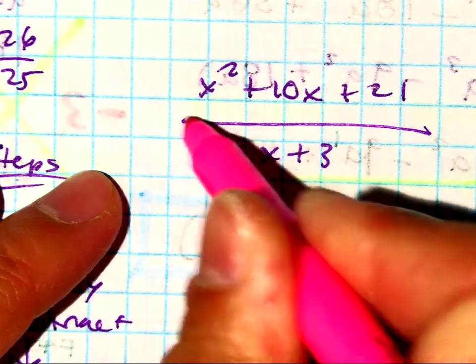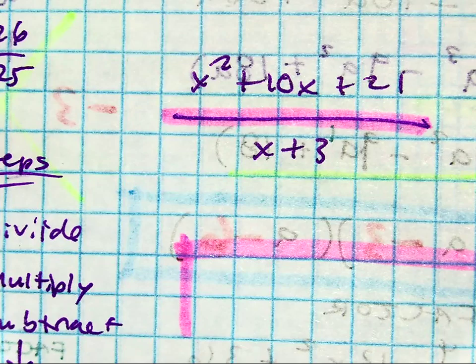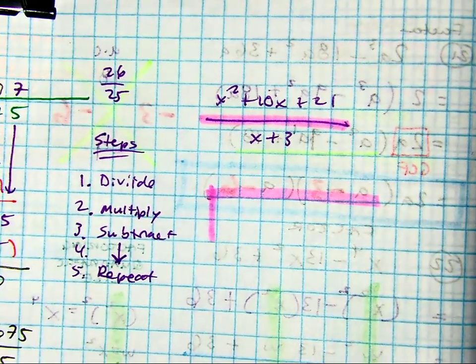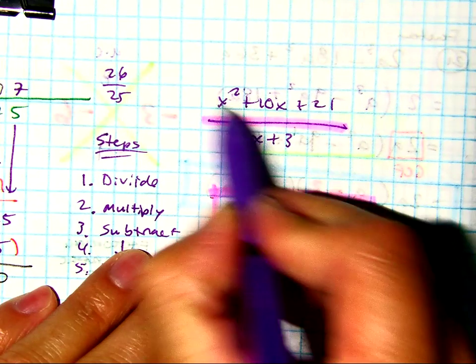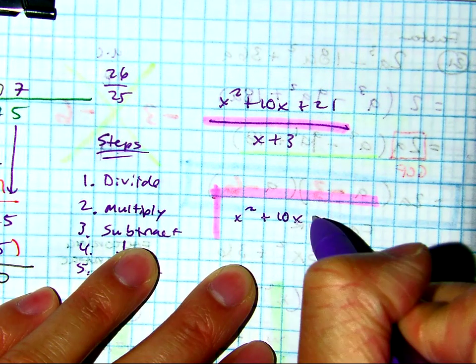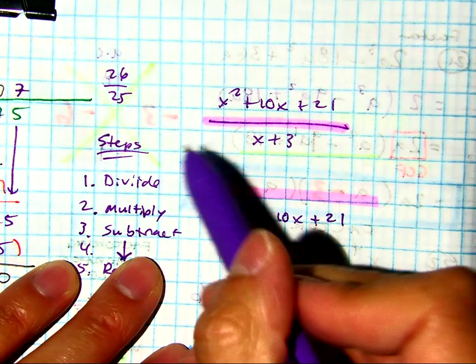So this division sign, we're just going to write as a division bar. And I'm going to connect this to basically what we did before. So here I have x squared plus 10x plus 21, and we're dividing that by x plus 3.